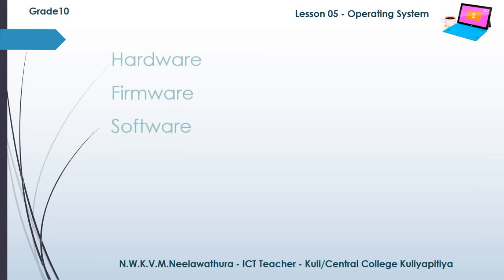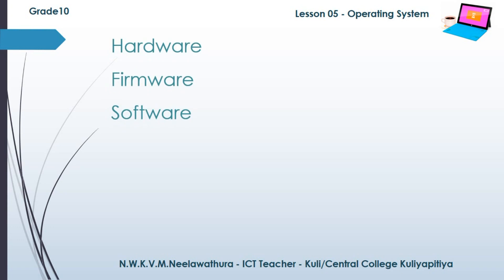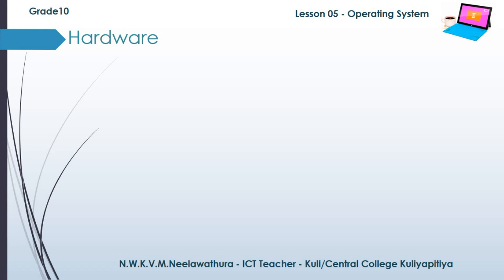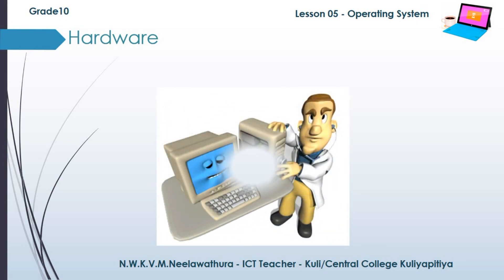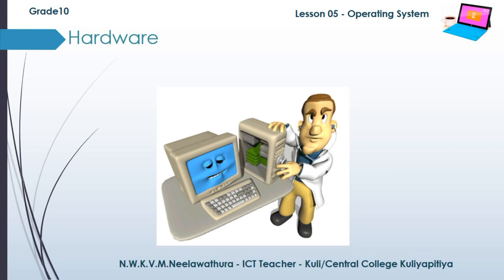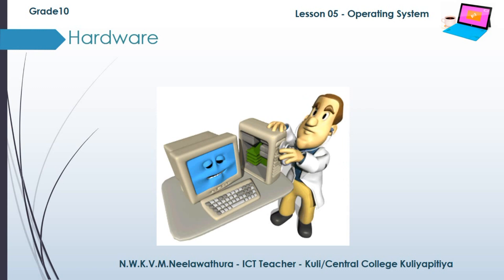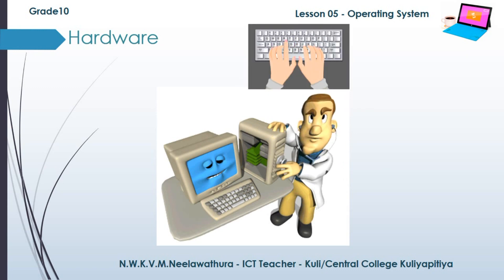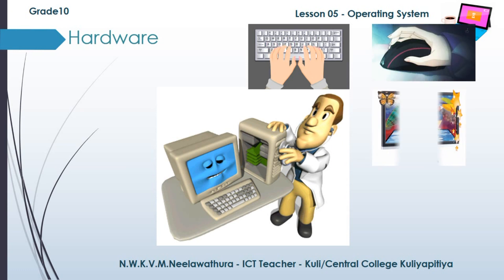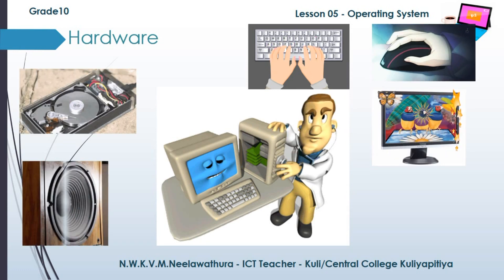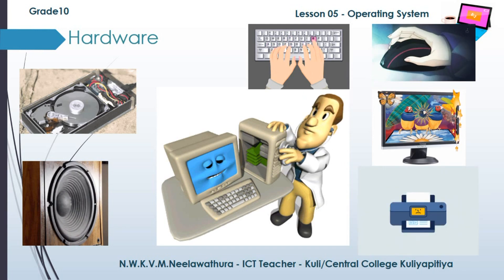A computer consists of hardware, firmware, and software. Any physical components of a computer system with a definite shape is called hardware. Examples of hardware include keyboard, mouse, monitor, hard disk, speakers, and printers.